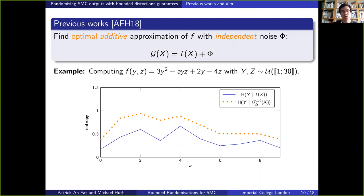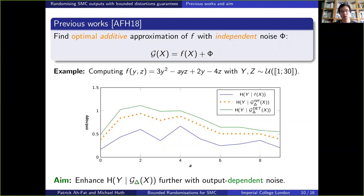The orange curve in the graph below shows the privacy gains that we managed to achieve in this particular example with the optimal additive approximation of f with independent noise phi, and the green curve shows the results of the methods that I'm going to present in the remainder of this talk. In order to achieve those results highlighted in green, we relaxed the assumption that the noise phi was independent of the output of f.